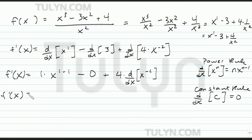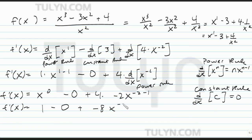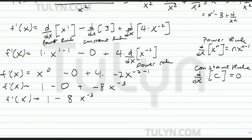f prime of x equals x to the 0 power, minus 0, plus 4 times the power rule applied to x to the negative 2. x to the 0 power is 1, minus 0, plus 4 times negative 2 is negative 8. x to the negative 2 minus 1 is negative 3. So f prime of x equals 1 plus negative 8x to the negative 3.